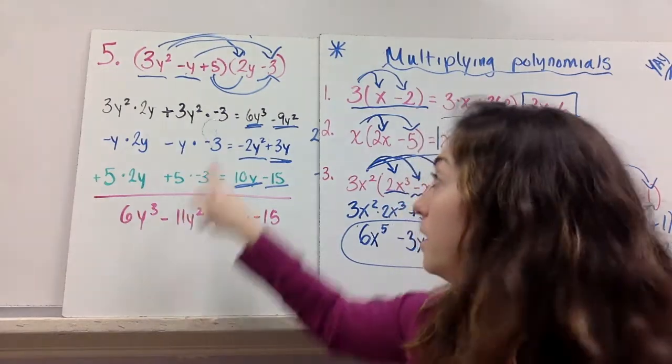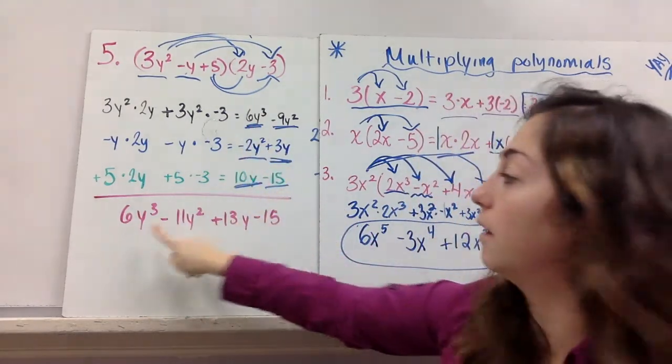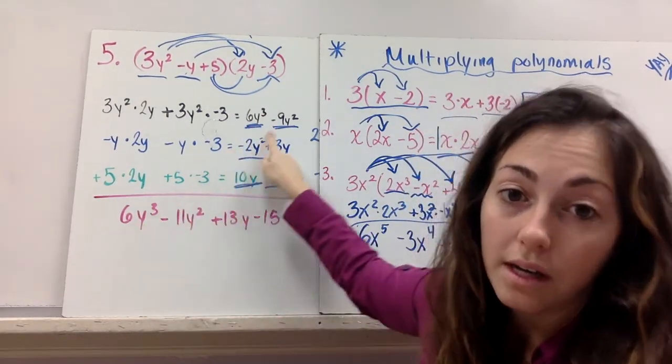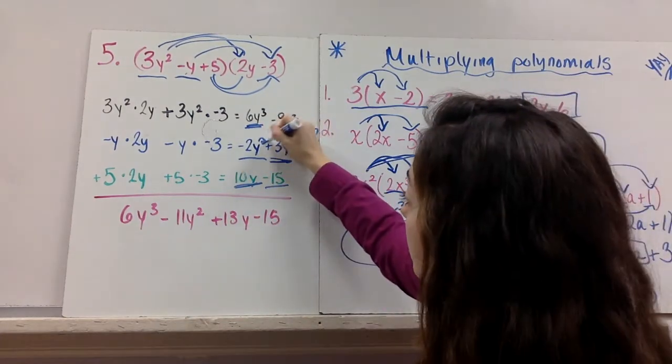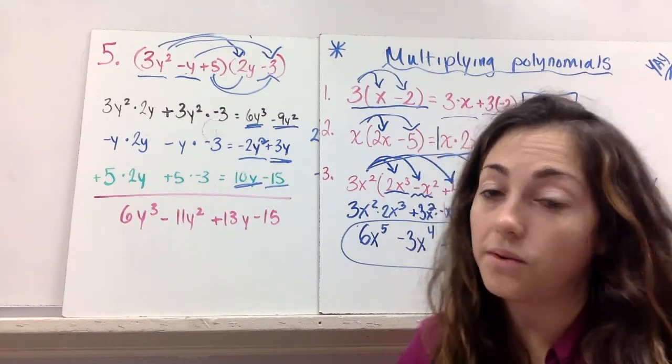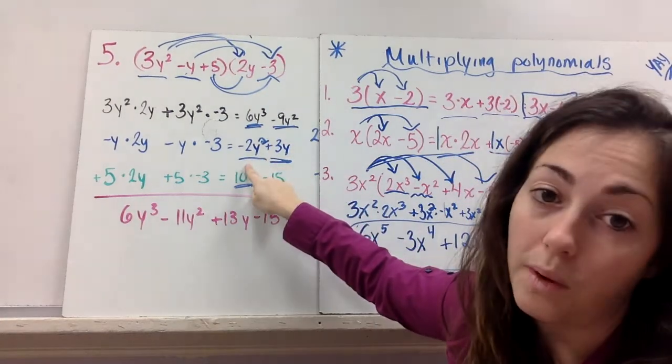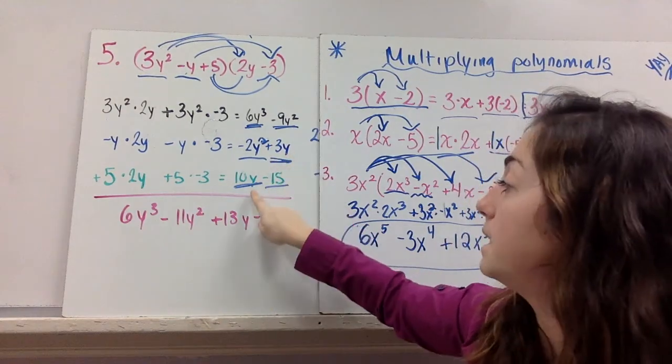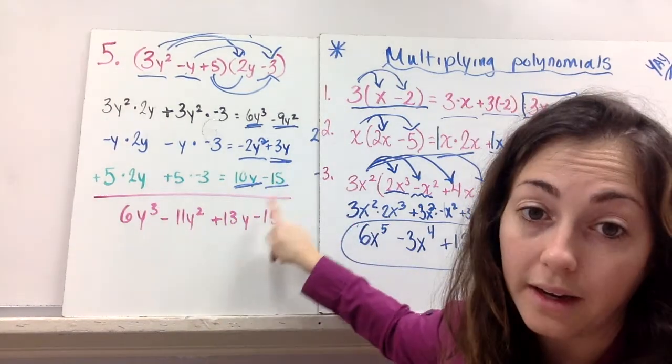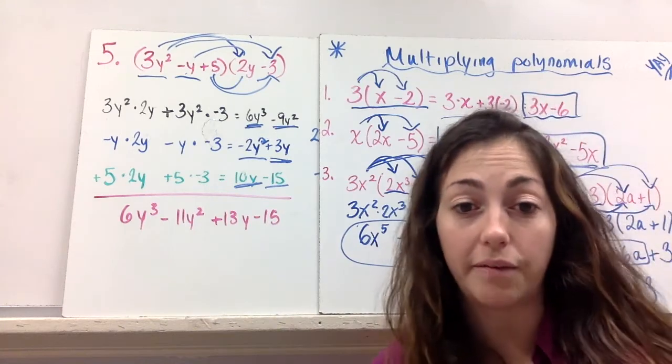So now, do I have anything the same? 6y cubed. Nothing like it. Write it down. Now, negative 9y squared. Yes, I've also got this 2y squared right here. So negative 9y squared and a negative 2y squared, when I combine them, is a negative 11y squared. And then 3y and 10y, they're 13y. And lastly, nothing the same as that negative 15.